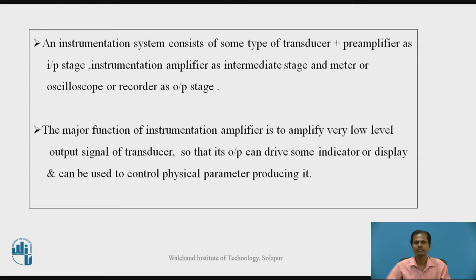An instrumentation system consists of some type of transducer plus preamplifier as an input stage, an instrumentation amplifier as an intermediate stage, and a meter, oscilloscope, display system, or recorder as an output stage. The major function of the instrumentation amplifier is to amplify very low level output signal of a transducer so that its output can drive some indicator or display system and can be used to control a physical parameter.